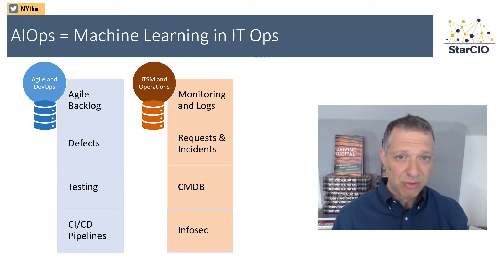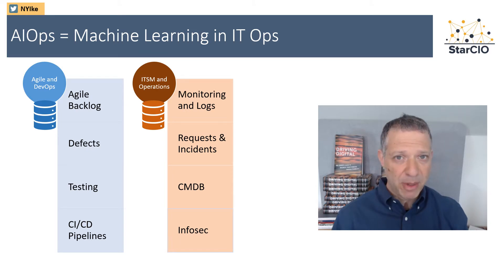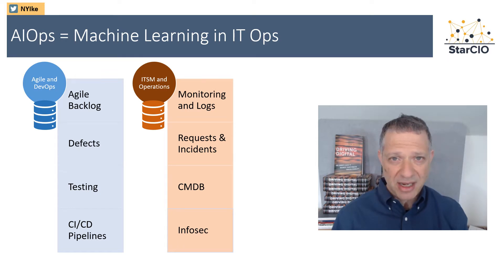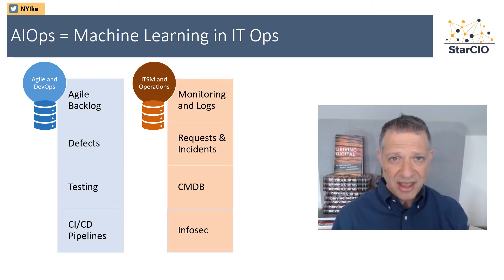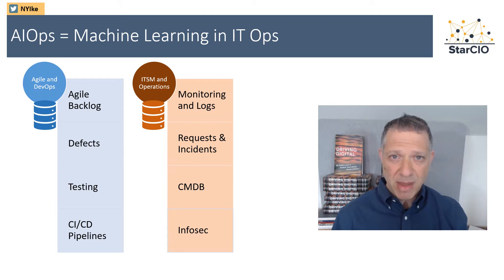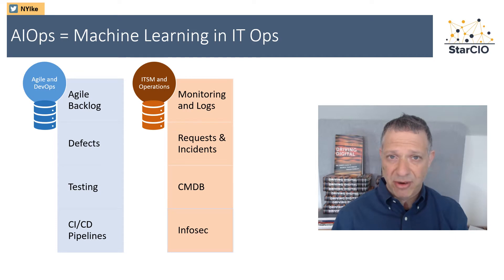We're looking at Agile tools with our backlogs. We have testing tools capturing how systems are performing when we're developing them. We're using defects to track where we have to make improvements to our products. We have ITSM tools for managing incidents and requests. And then we have many, many monitoring tools — in fact, many organizations have well over 10 different monitoring tools to deal with our infrastructure.